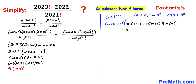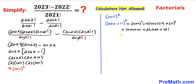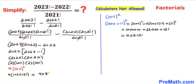1000 squared is simply 1,000,000 — six zeros. Then 2 times 1000 times 11 gives us 22,000. And 11 squared is 121. Adding all these: 1,000,000 plus 22,000 plus 121 equals 1,022,121. So 1011 squared is 1,022,121. Replacing in our expression: 4 times 1,022,121. Distributing gives us 4,088,484.